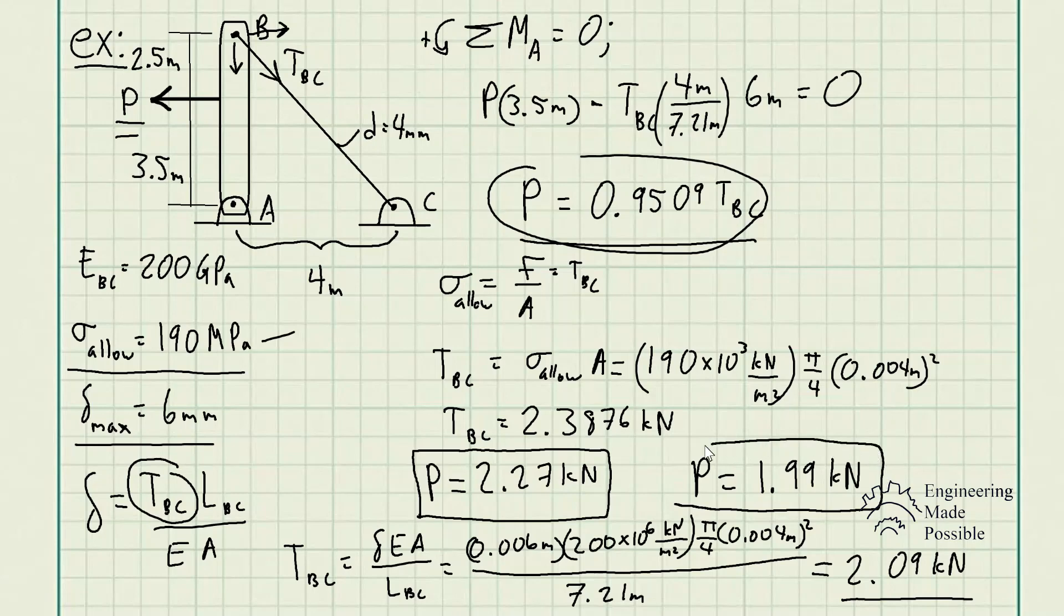Now we basically solved the maximum external load that we can apply to a structure such that we do not exceed the allowable stress. Then we went ahead and did the same thing to not exceed the maximum deformation of 6 millimeters. So we now solved these two. Now the question is, which one do we go with?